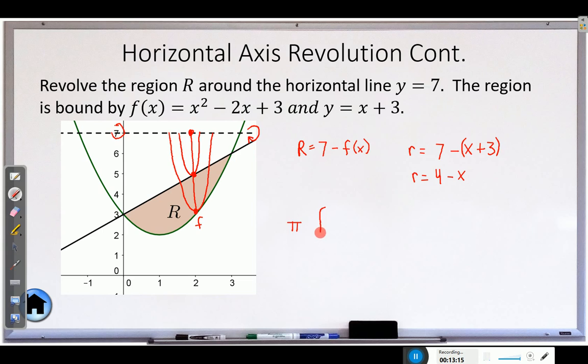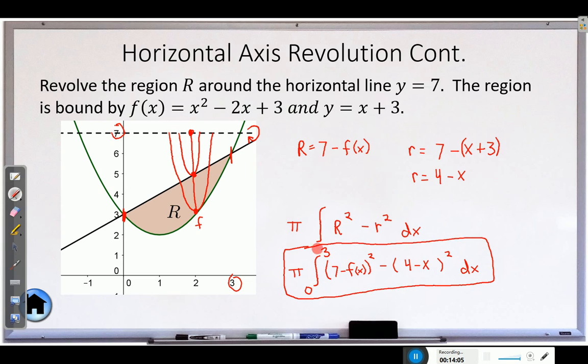And then pi, I'm going to do the one big integral. Pi R squared minus r squared is what we are doing. So that will be pi times the big radius squared minus the small radius squared. So seven minus f of x squared and four minus x squared dx. And then we have to go from where to where. So again we are going from zero all the way to, it looks like those cross at three, since it's the same region as last time.